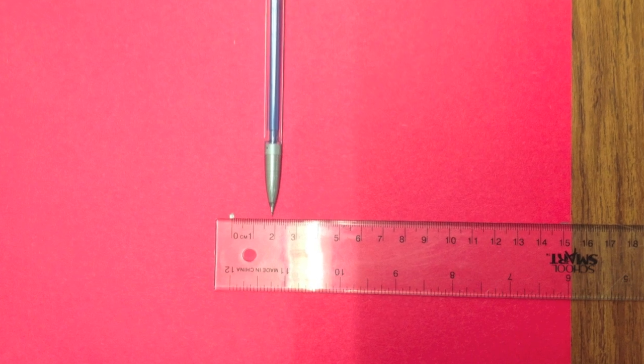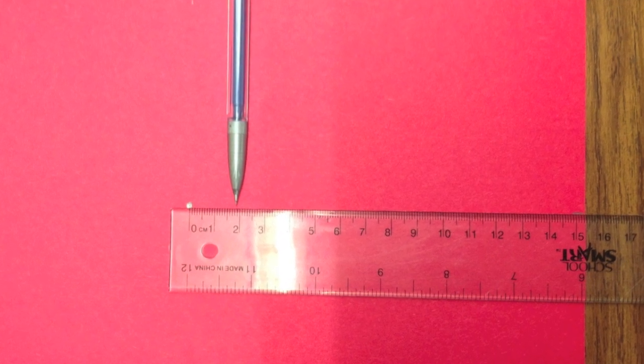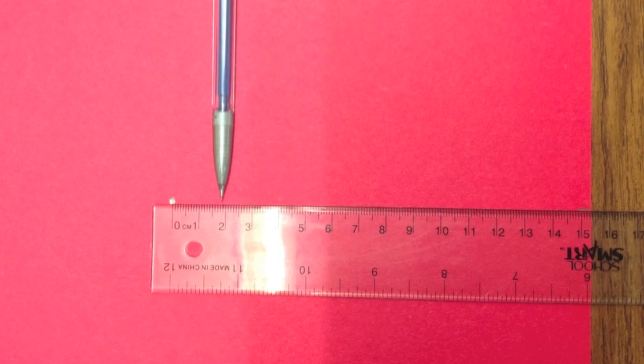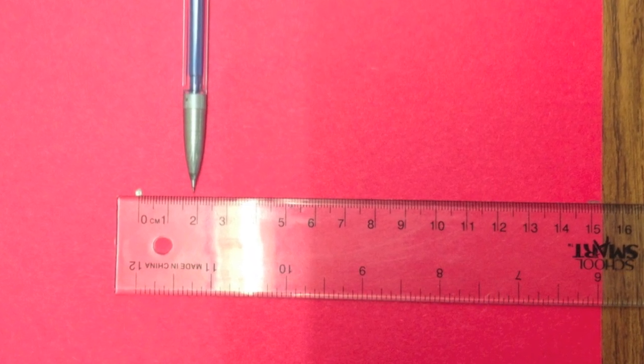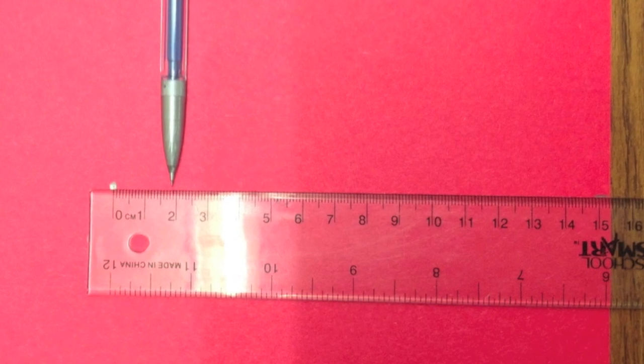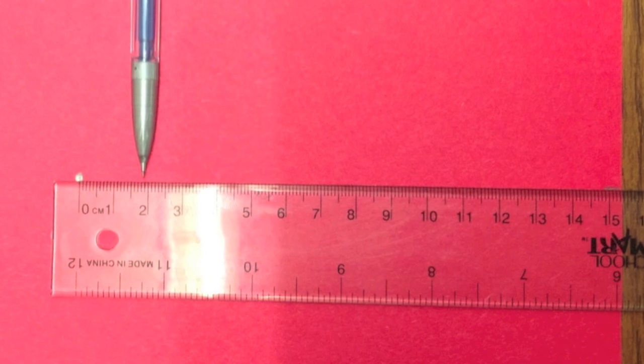Before I draw my first line, I'm going to measure 11.5 cm on the right side of my paper, and I'm just going to use this mark as a guiding line for my first actual line. Now, to draw my first line, I'm going to put my ruler at the center dot and match it up with the mark I just made on the right side of my paper, and I'm going to draw a line segment that is 2 cm long, and I'm going to extend it to the right of my center dot.